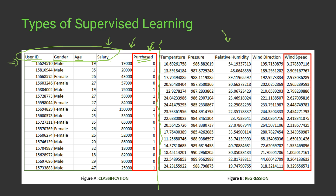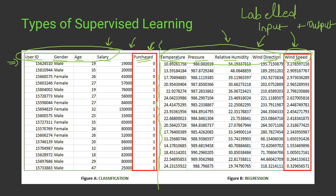The second dataset has temperature, pressure, relative humidity, and wind direction, and we have to predict the wind speed. We also have both input and output in this case, which is why this dataset is also known as a labeled dataset.